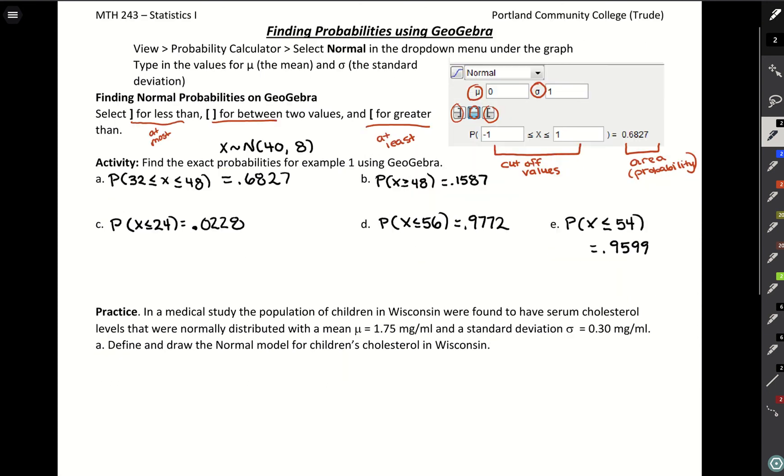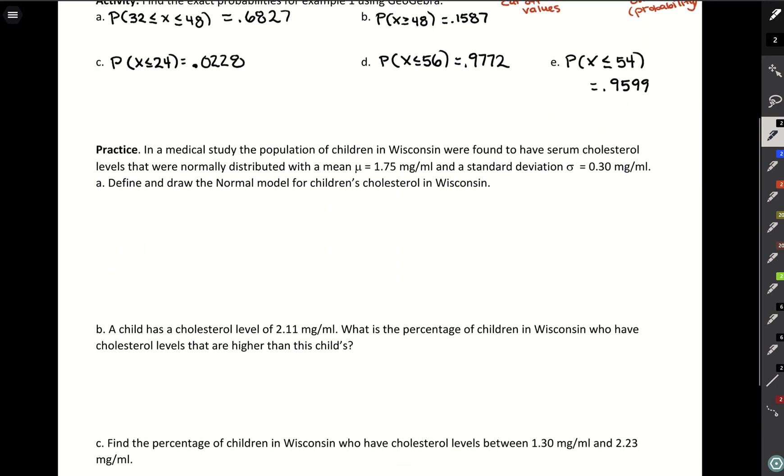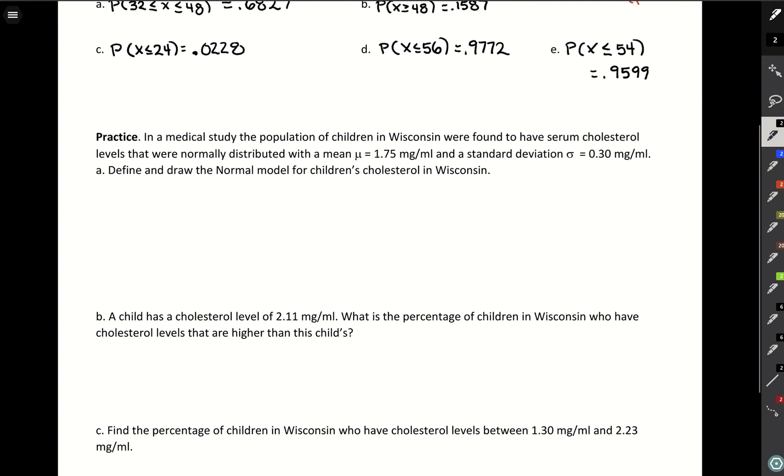So let's practice this. In a medical study, the population of children in Wisconsin were found to have serum cholesterol levels that were normally distributed. That's key wording there. This tells us that we know we have a bell-shaped curve. We have a mean and a standard deviation. So we're going to have this variable that's distributed normally with a mean of 1.75 milligrams per milliliter and a standard deviation of 0.3.